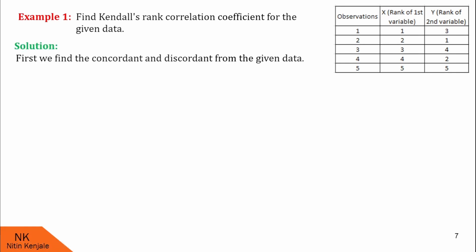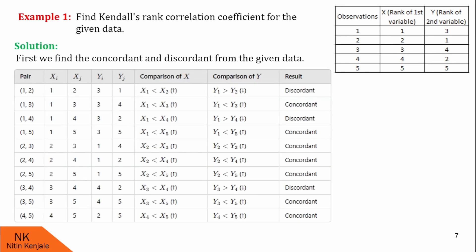First we find the concordant and discordant pairs from the given data. For that, we will prepare a table. In the first column, I am going to write the pairs of observations.